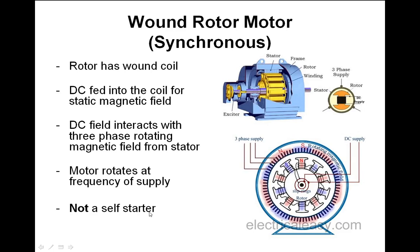The wound rotor synchronous motor is not a self-starter — it needs assistance, which we'll look at in the next presentation: what methods are used to start it. It offers better torque, and you can change the excitation by varying the DC current into the coil and the current into the stator windings.